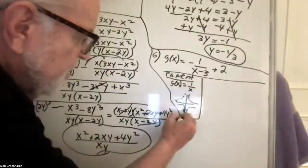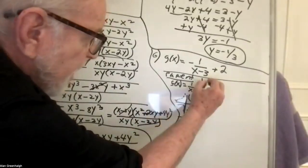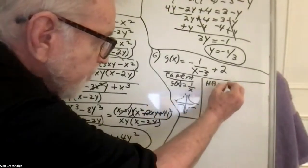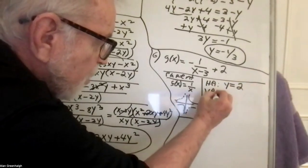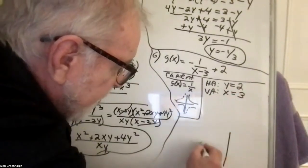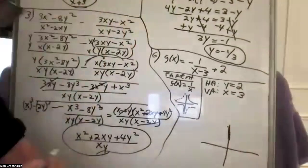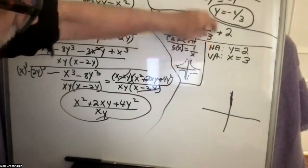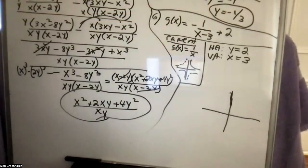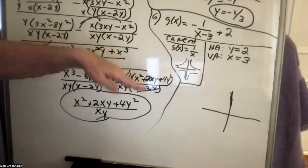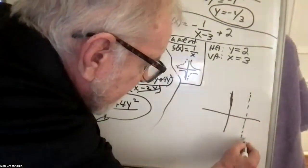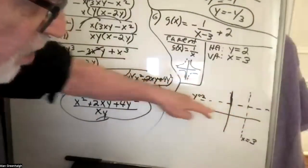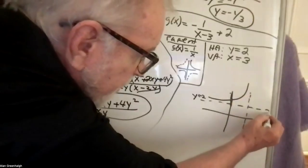The horizontal asymptote would be y equals 2. The vertical asymptote would be x equals 3. A lot of people didn't quite know how to sketch it — they had the asymptotes but didn't know what to do next. Once you graph x equals 3 and y equals 2, you can forget about the old axes and put the function where it belongs — in there — because of the negative giving the reflection.